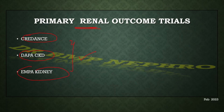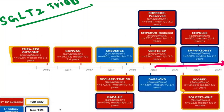The rest are primary cardiovascular outcome trials. This is the overall summary slide of the SGLT2 inhibitor drugs and their trials. The drug names mentioned include empagliflozin, canagliflozin, and others.